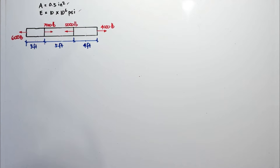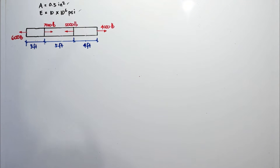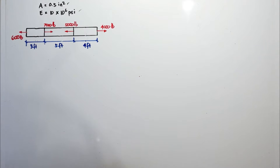The bar is divided into three sections: a three-foot long section, a five-foot section, and a four-foot section. There are four external loads: six thousand, seven thousand, five thousand, and four thousand pounds.